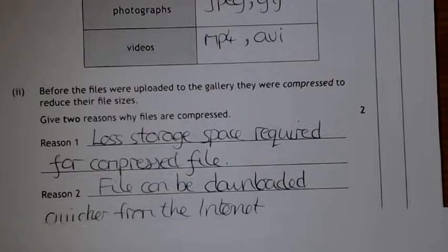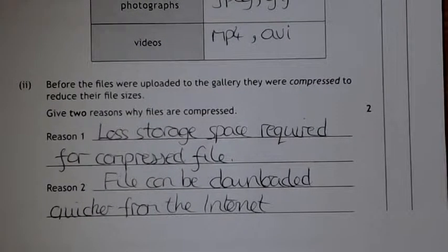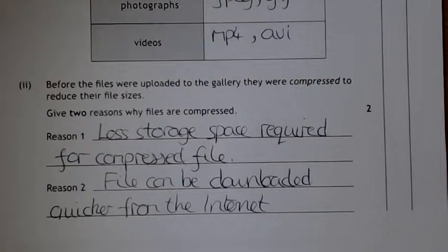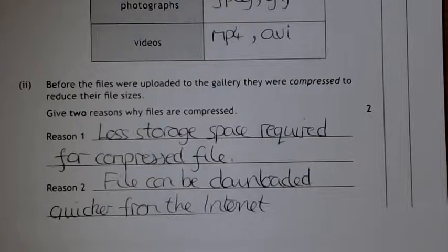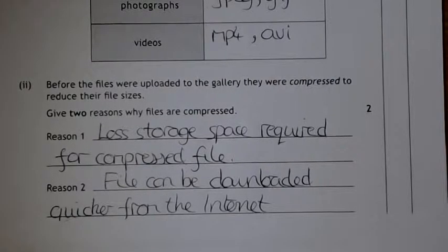Second, if a file is compressed it allows it to travel across the network a lot quicker, so it can be downloaded and uploaded a lot faster from the internet. So compression means a small file size, less storage used, and much quicker downloading over the network.